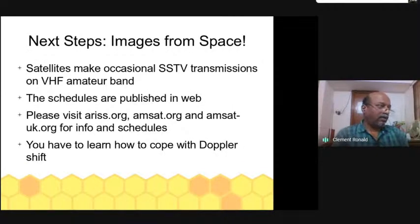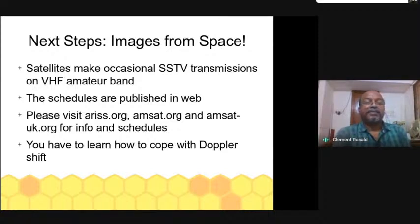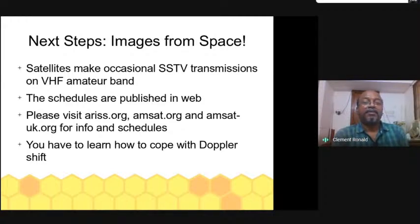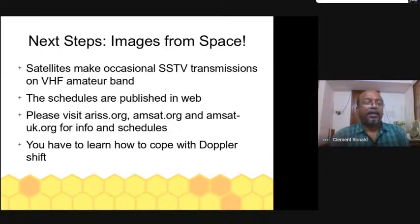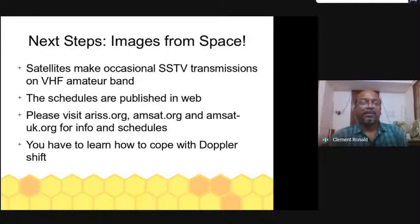So we have seen the basics of getting started with SSTV. Now, what are the next steps moving ahead? You can receive satellite images — SSTV images from satellites are transmitted occasionally. From time to time they will publish the schedule on the web. You can visit amsat.org and ariss.org to see the SSTV transmission schedules. There are also awards given for receiving SSTV images from space.